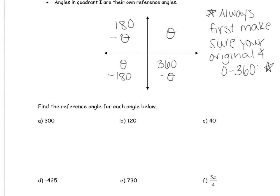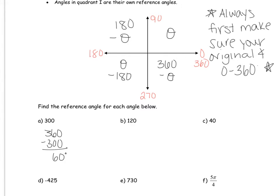So how do I find a reference angle for 300 degrees? 300 is between 270 and 360, so that's quadrant four. We take 360 minus 300 and we get 60. That's the reference angle.